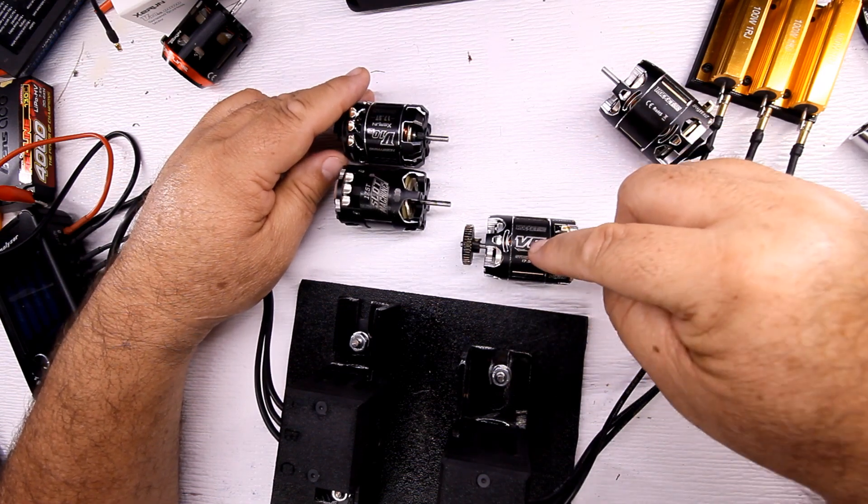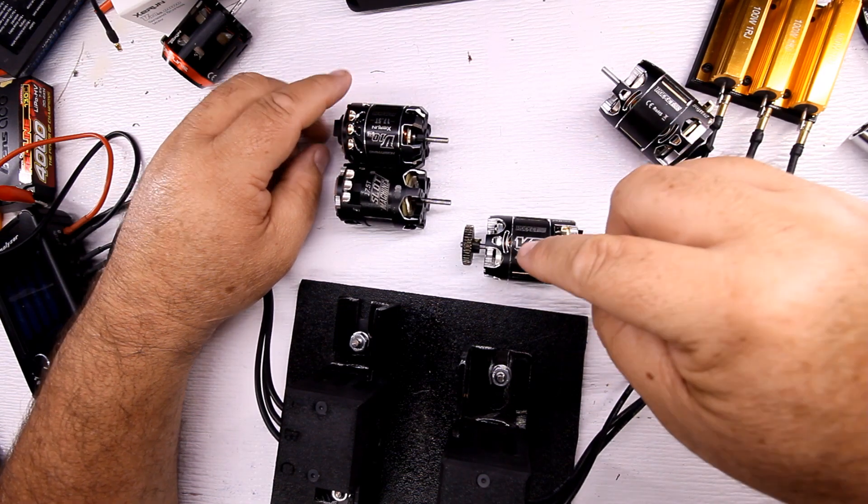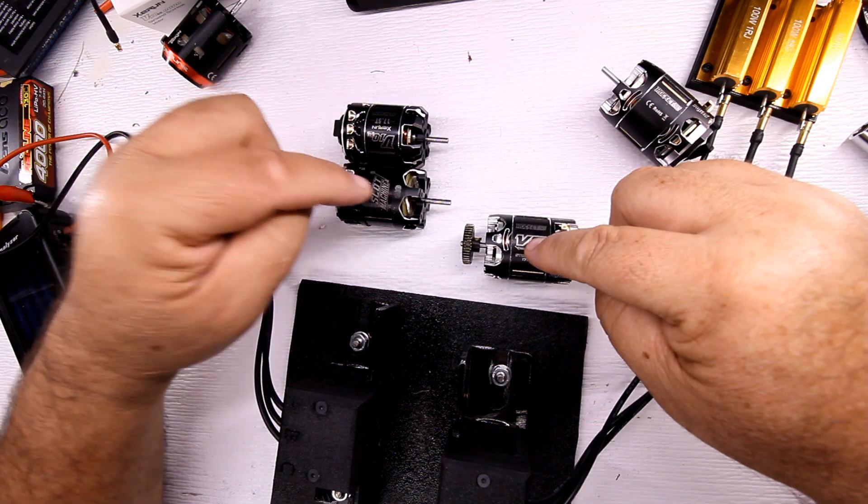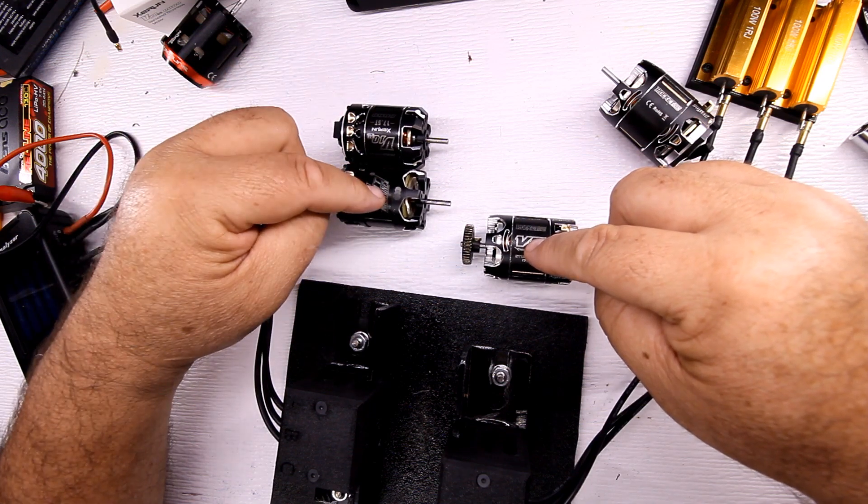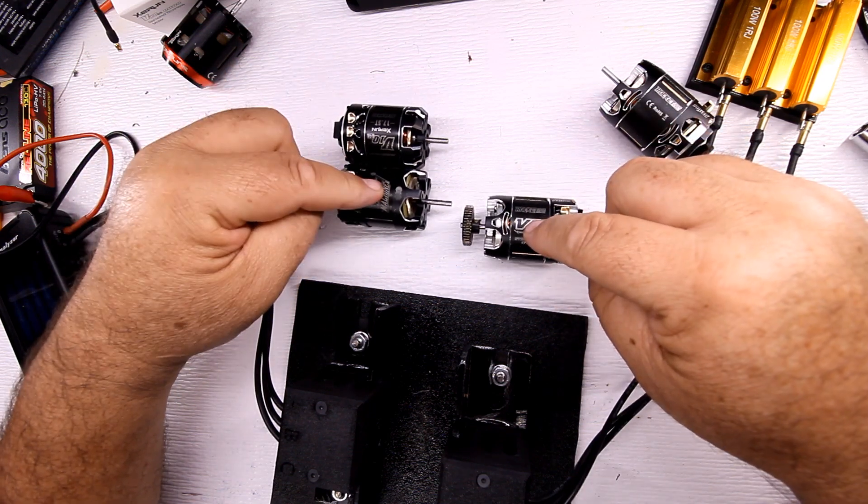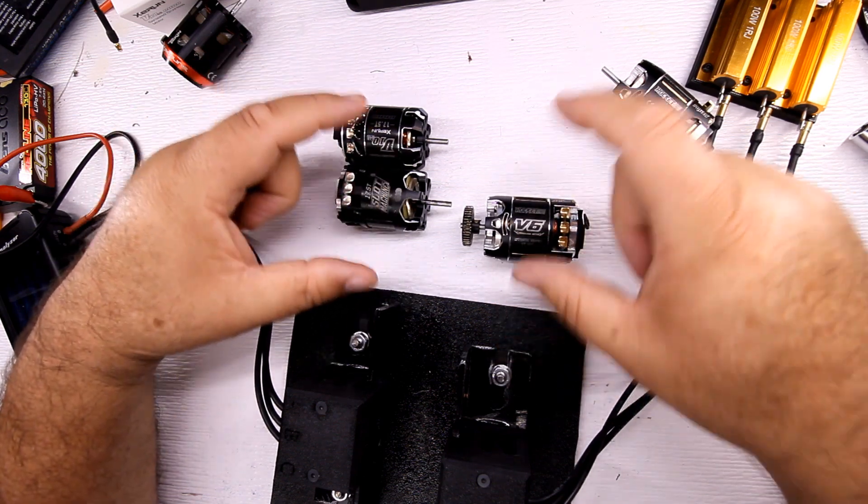Because the faster you spin the load motor, the more of a load it is on the drive motor. So if this is spinning 25,000 RPMs, this is going to put a heavier load on this one. So you're not going to be able to get a really good comparison that way.